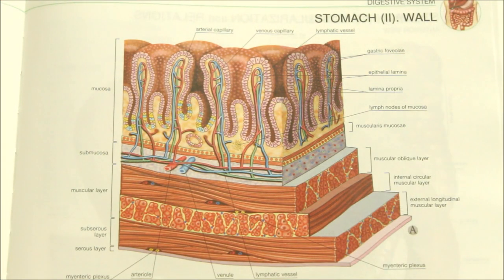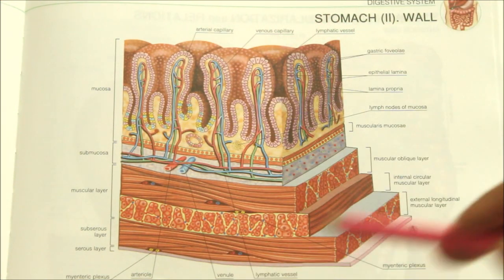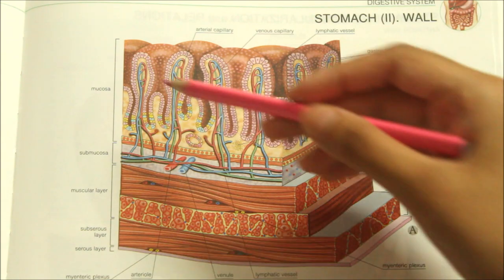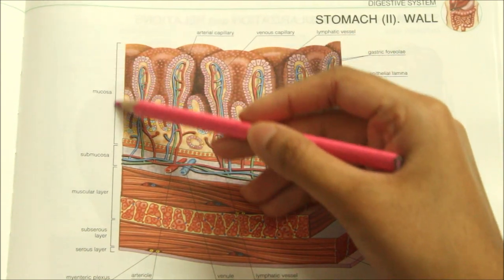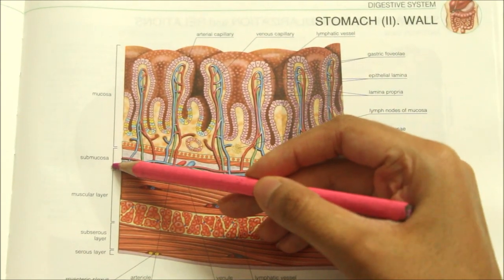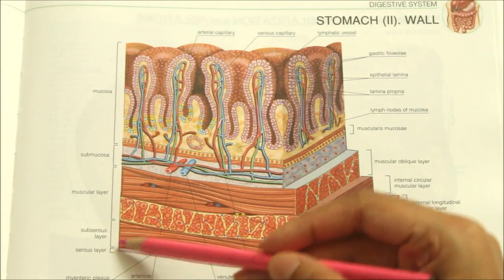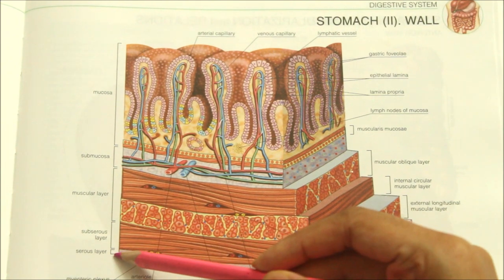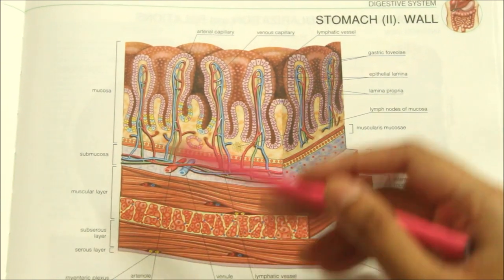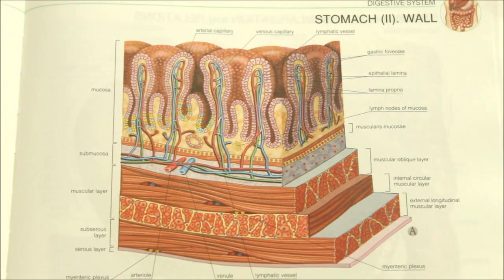Looking at the features of the interior of the stomach, it has a mucosa, a submucosa, a muscle coat, and a serous layer.